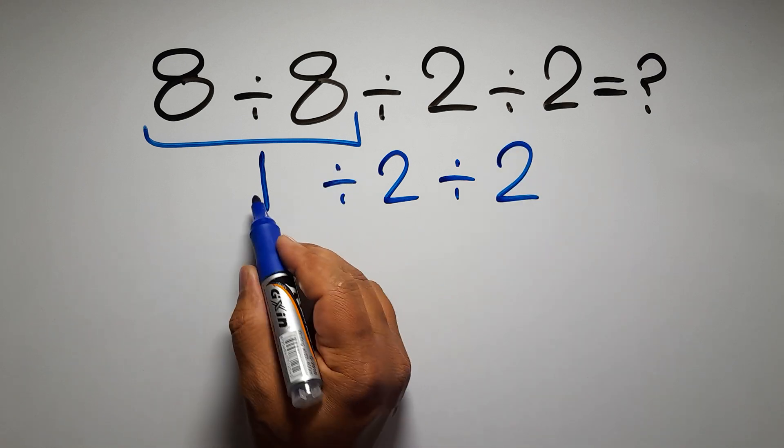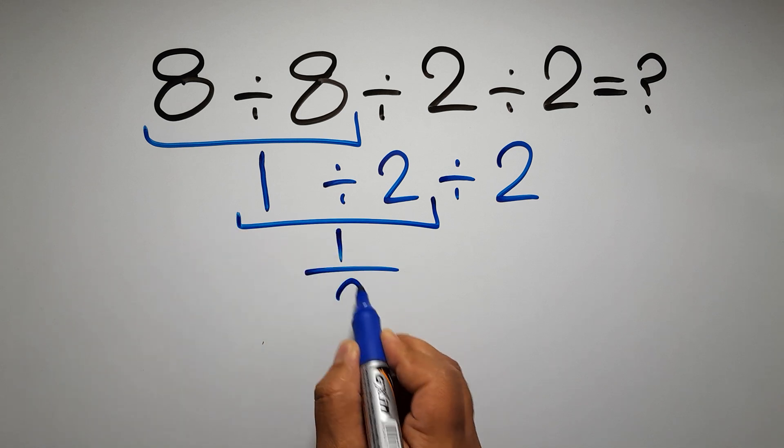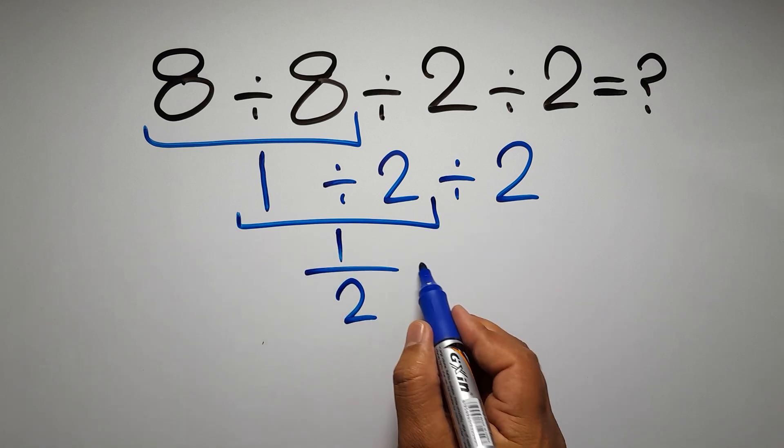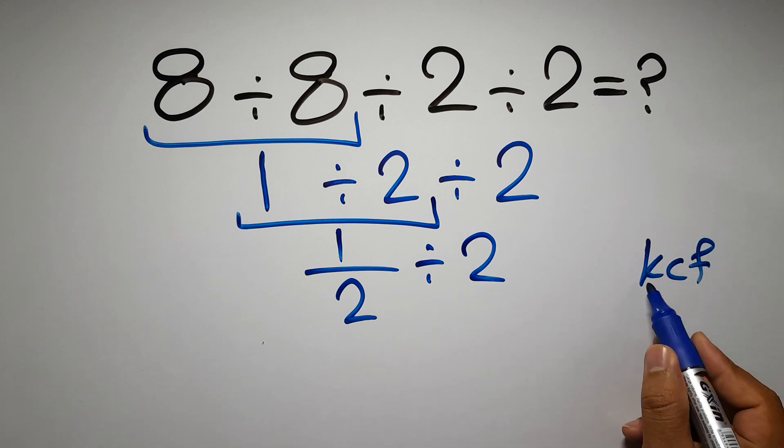We have to do this division. 1 divided by 2 can be written as 1 over 2, so 1 over 2 divided by 2. According to the KCF rule, K stands for keep, C stands for change, and F stands for flip.